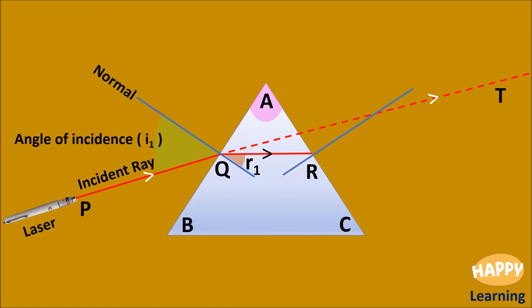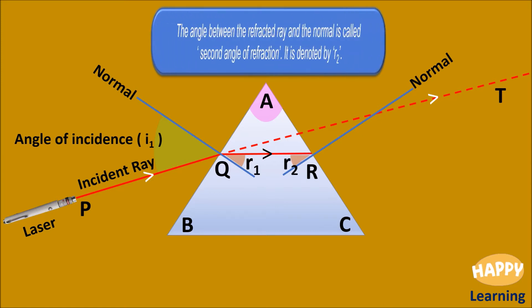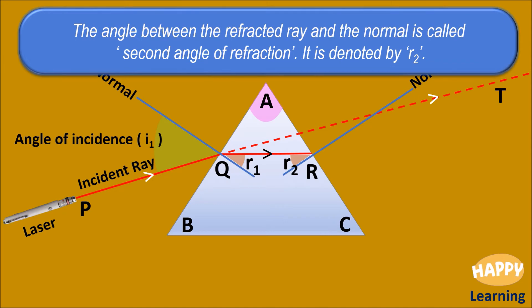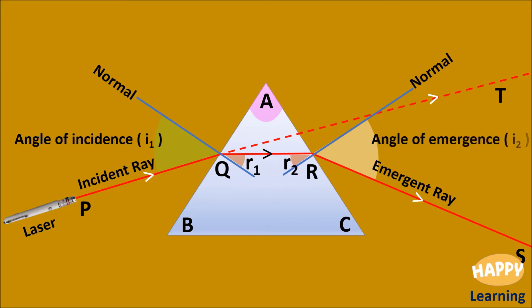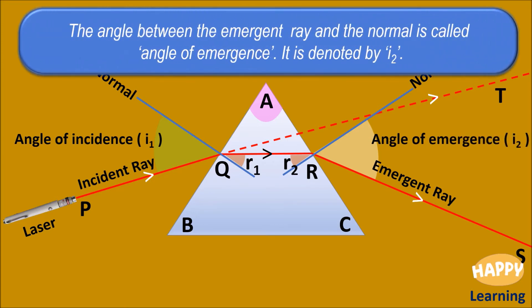This is the normal to the second refracting surface. The angle between the refracted ray and the normal is called second angle of refraction. It is denoted by R2. I2 — and this is the emergent ray. The angle between the emergent ray and the normal is called angle of emergence. It is denoted by I2.